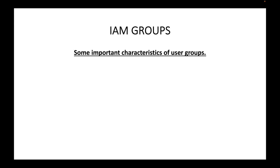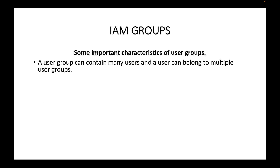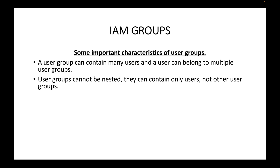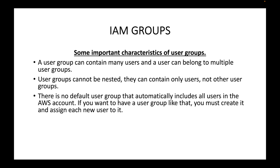There are some important characteristics to remember about IAM user groups. A user group can contain many users, and a user can belong to multiple user groups — for example, a developer can belong to the developer group, the cloud engineer group, and the operations group at the same time. However, user groups cannot be nested; they can only contain users, not other user groups.